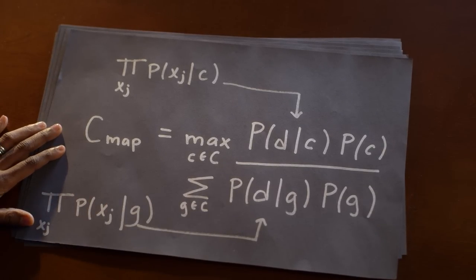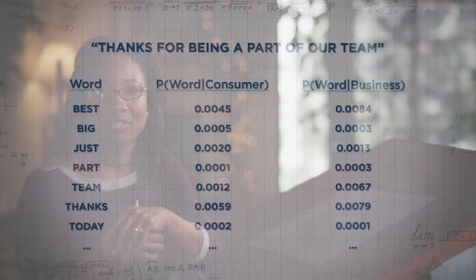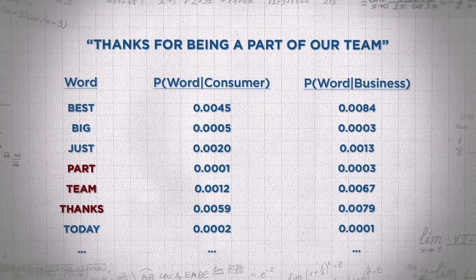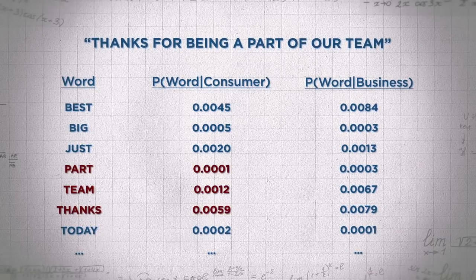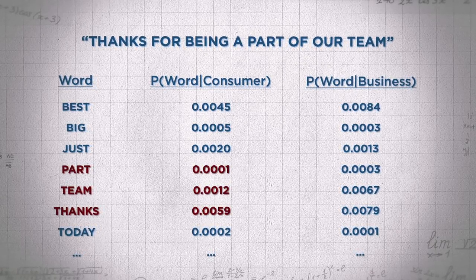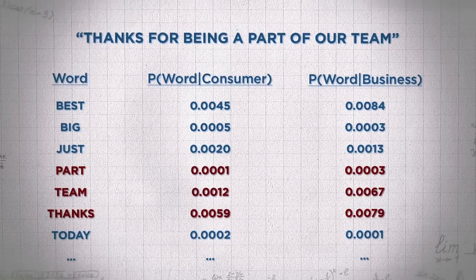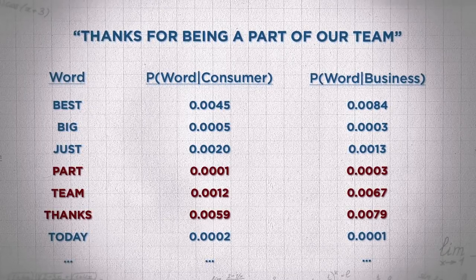Suppose we got a message that says, 'Thanks for being a part of our team,' and we want to use our Naive Bayes algorithm to classify that message. Only certain words are going to be used to classify, because we had a training set of M samples. We're going to pull out the words that are most important — in this case it might be 'thanks', 'part', and 'team'. As you can see on the table, we have the probability of seeing that word given that it's a consumer message, and the probability of seeing the word given that it comes from a business. We can use these probabilities to calculate the chance that this is a business message or a consumer message.